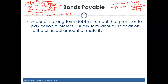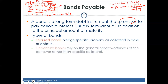From the borrower's standpoint, issuing a bond creates a long-term liability for the face value due at maturity, plus a short-term liability for interest payments due every six months. There are different types of bonds to consider. A secured bond is where the borrower pledges specific property as collateral in case they default on the bond — failing to pay interest or principal at the maturity date.